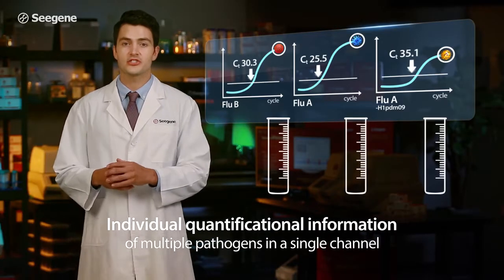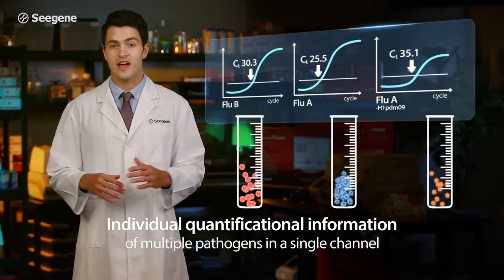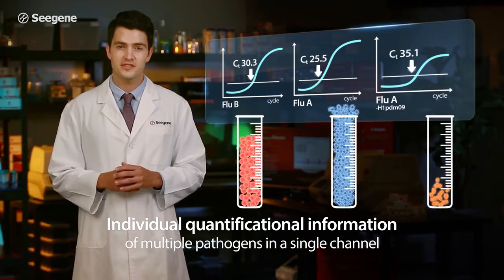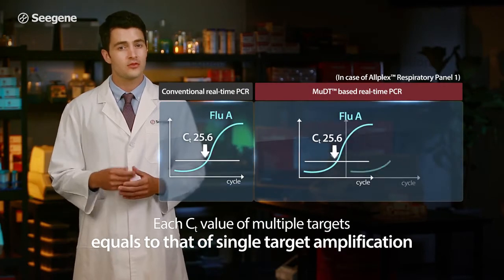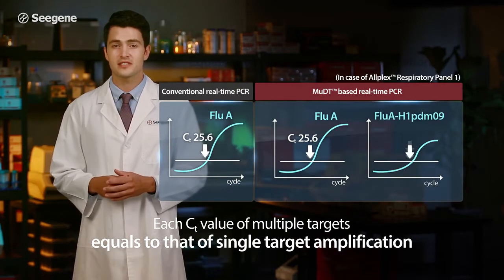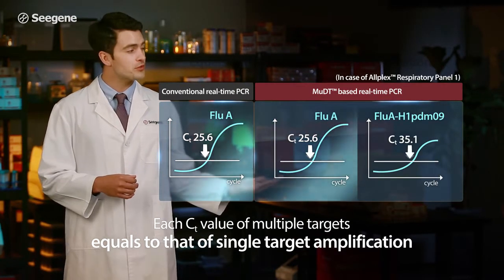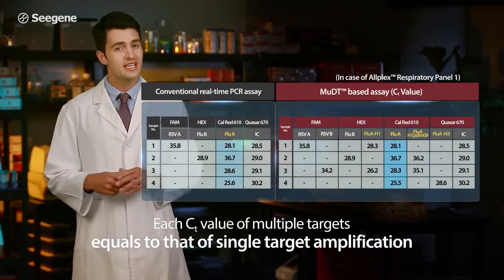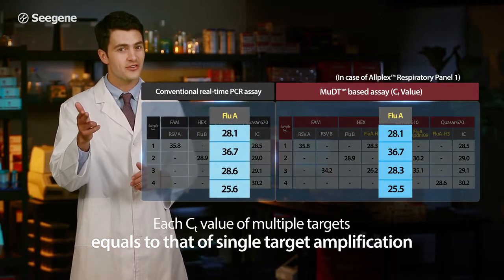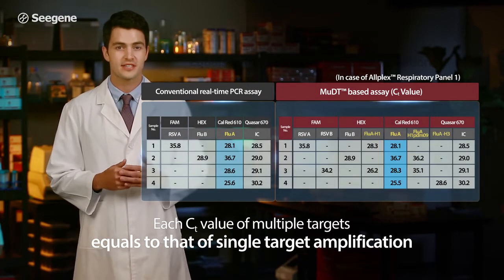MUDT technology makes it easy to quantify many individual pathogens in a single channel simultaneously, with no compromises in data quality. Multiple target detection with MUDT technology is as accurate as conventional real-time PCR technique.